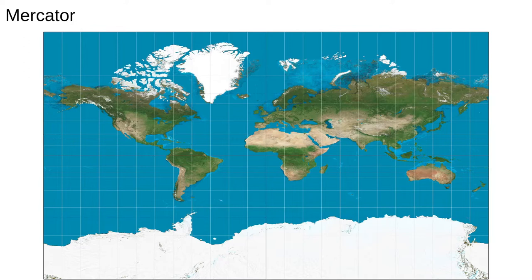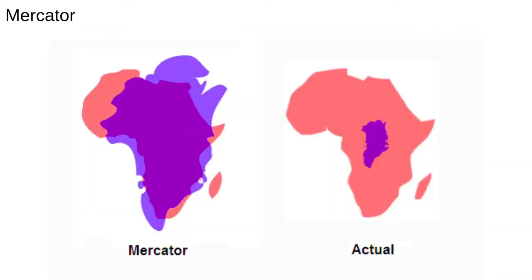While we can't map exactly from the globe to the plane, we can preserve some properties. For example, the famous Mercator projection, shown here, represents any course of constant bearing as a straight line. Bearing refers to the compass direction a craft has to be steered, so you can see how this property makes Mercator an ideal projection for navigation, but not so much for representing data.